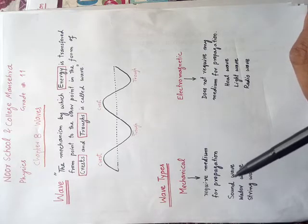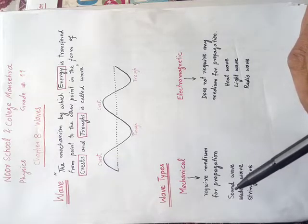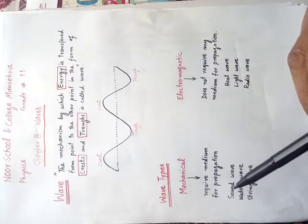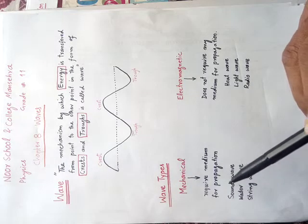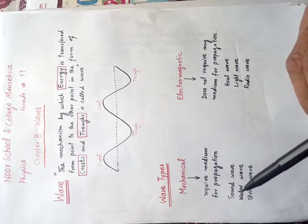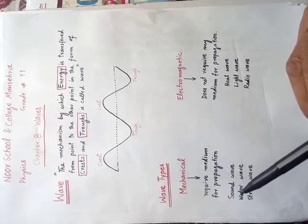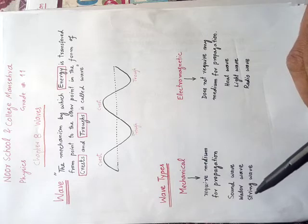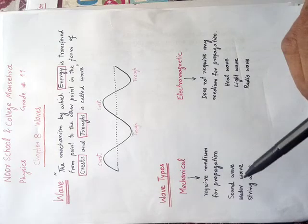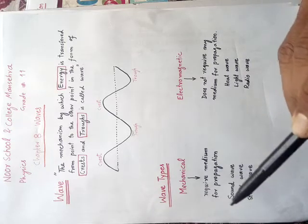Sound waves travel in air. If air is removed from around us, sound will not reach others — so sound waves need air as a medium and are therefore mechanical waves. Water waves are produced on the surface of water; if there is no water, water waves cease — so water waves are also mechanical waves. String waves produced on a rope are also mechanical waves, because without the rope those waves cannot be produced. Any wave that requires a medium for propagation is called a mechanical wave.